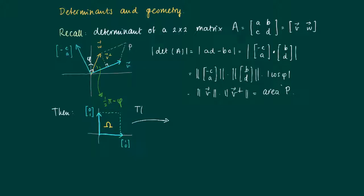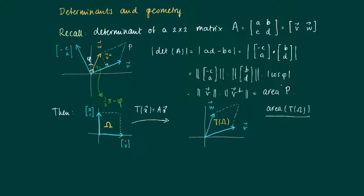So if we have the following unit square spanned by (1, 0) and (0, 1) and we apply the linear transformation A times x, what comes out is the first column — the mapping of (1, 0), that's V — and W, the mapping of (0, 1). So we get that the area omega, which is 1, is transformed into the area T(omega), which is the absolute value of the determinant of A.